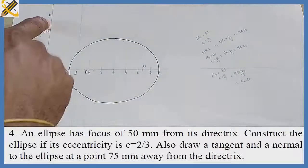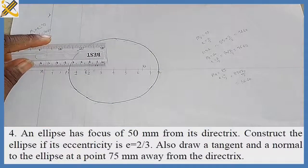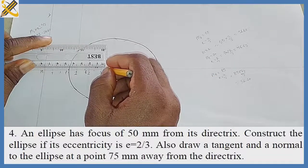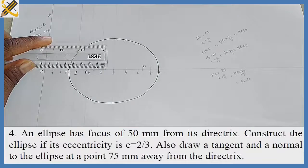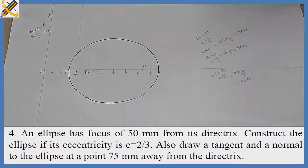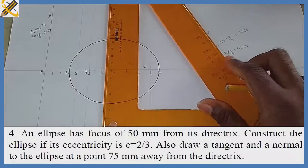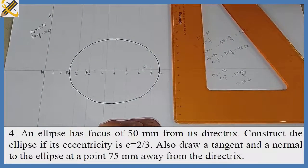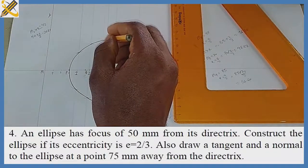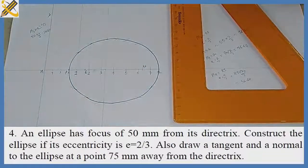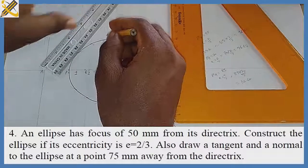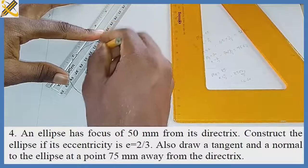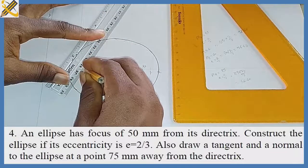These vertical lines are our directrice. I'm measuring 75mm towards the right-hand side from my directrice — this is my mark of 75mm. On that mark of 75mm I produce a horizontal line. This horizontal line for 75mm is where it touches my ellipse.